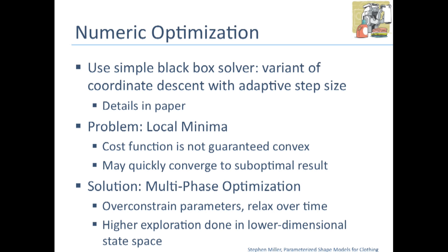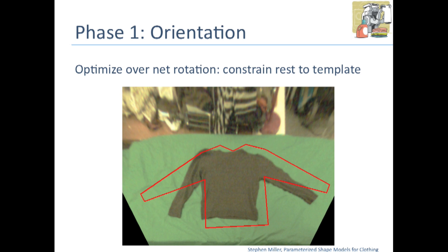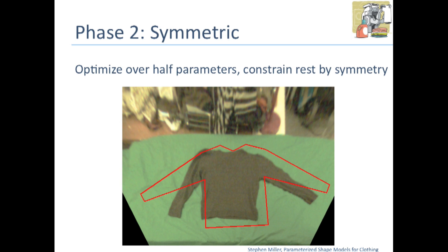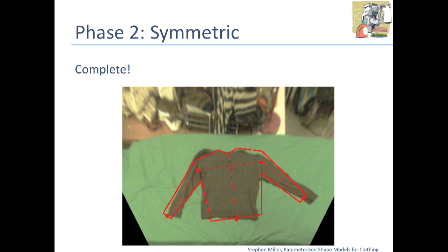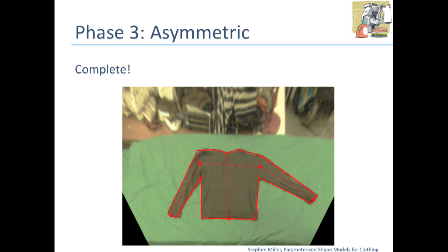Our solution was a multi-phase optimization. We start by over-constraining the parameters of our model and then slowly relaxing over time. The key idea is that the biggest exploration will be done in the smallest state space, and then we fine-tune as we get closer to the correct result. In phase one, we optimize just over the rotation of the points, constraining the rest of the template. In phase two, we do a symmetric optimization over half of the parameters, constraining the rest by symmetry. In phase three, we do the asymmetric phase where we optimize over every parameter. In the end, we converge on a fairly good parse of what the clothing article looks like.